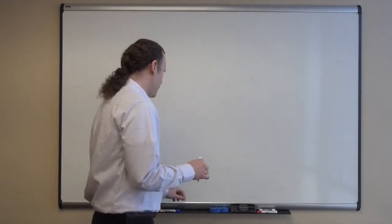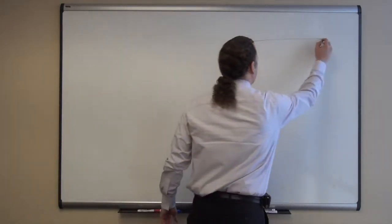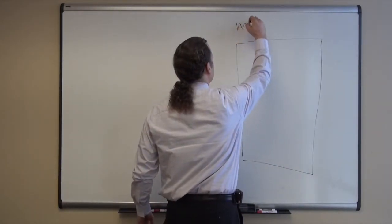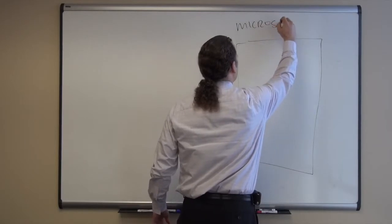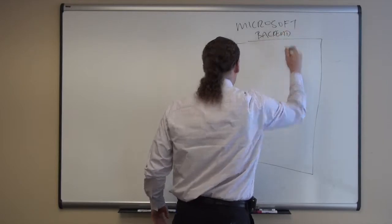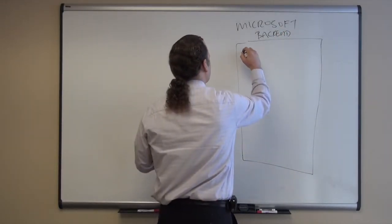So on the right-hand side here I'm going to draw a typical Microsoft backend. So here inside this backend we're going to have some of the key technologies. So there's our backend and you can imagine some of the key technologies. We have things like BizTalk server.